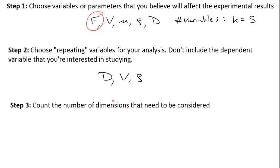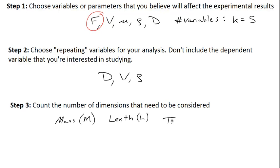The third step is to count the number of dimensions that we need to consider. We have dimensions of mass — for example density is kilograms per cubic meter. We've got length, because it describes the diameter. And we've also got a dimension of time, since velocity is length per unit time. So we've got three dimensions, and we call this number r. In this case r equals three.